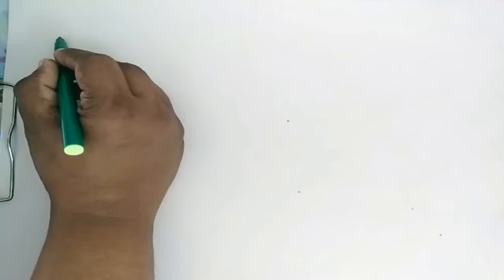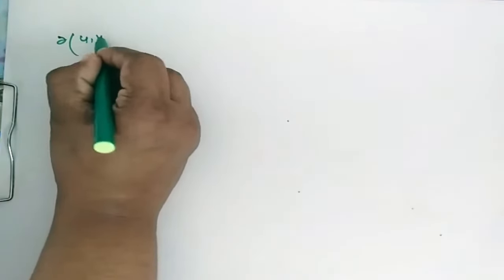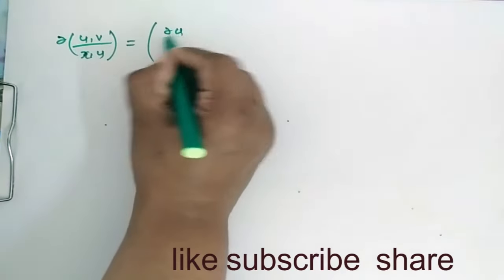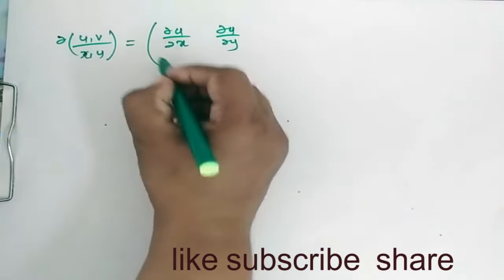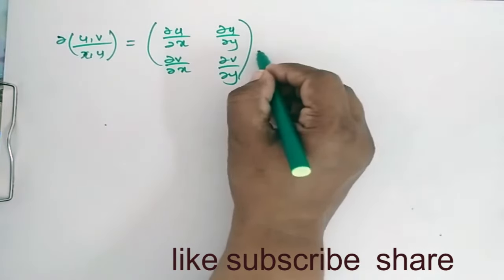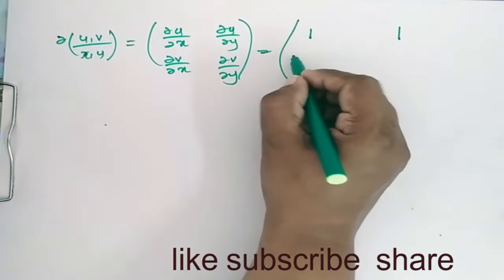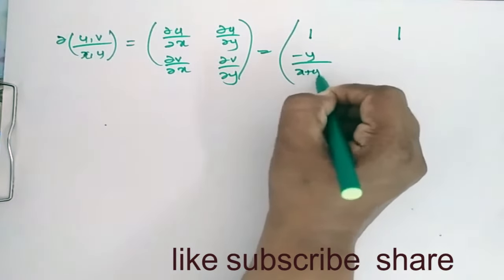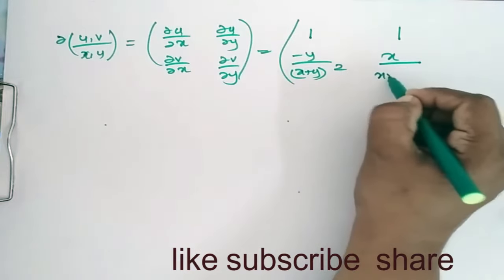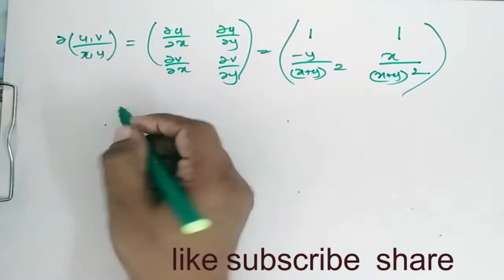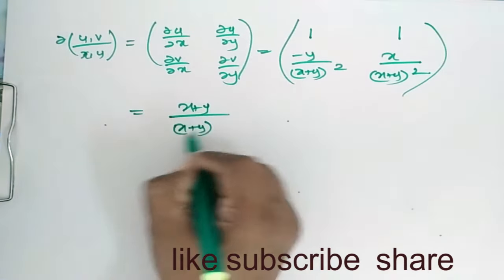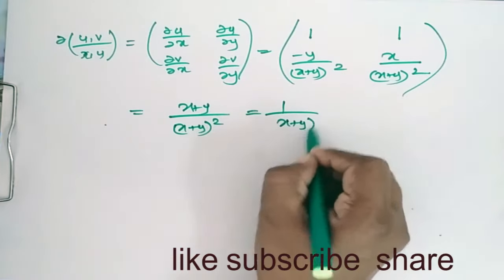Now, ∂(u,v)/∂(x,y) is the determinant with entries: ∂u/∂x, ∂u/∂y, ∂v/∂x, ∂v/∂y. This evaluates to 1 times (1 minus y/(x+y)²) ... which simplifies to (x plus y)/(x plus y)² = 1/(x plus y), and since u equals x plus y, this equals 1/u.